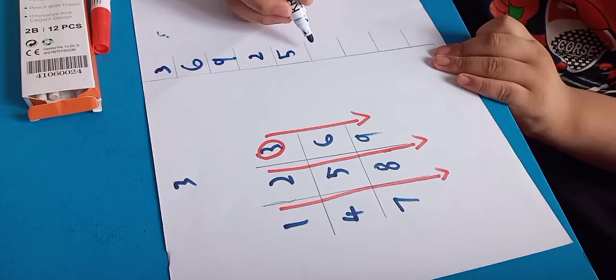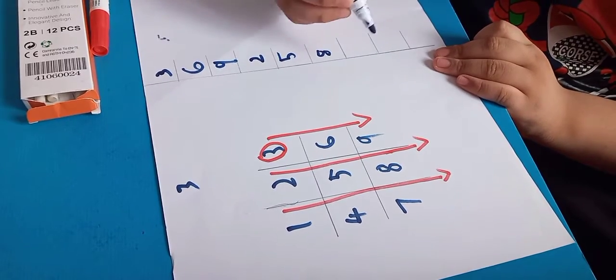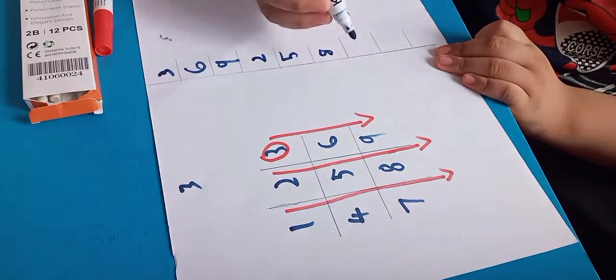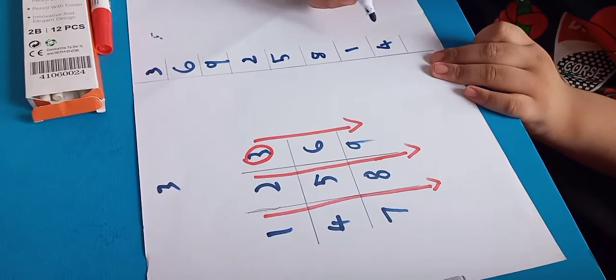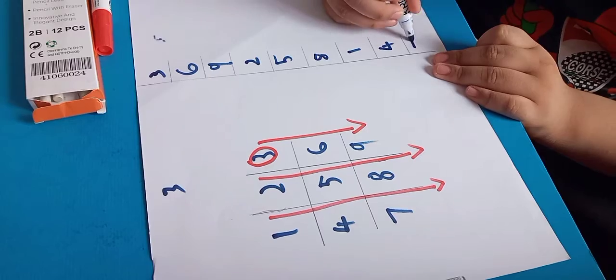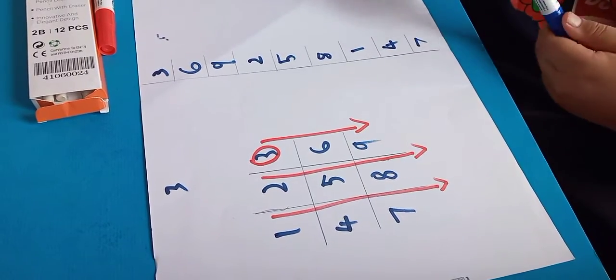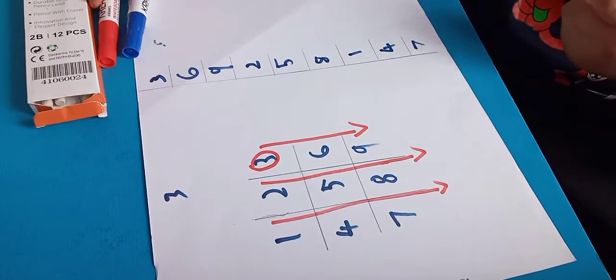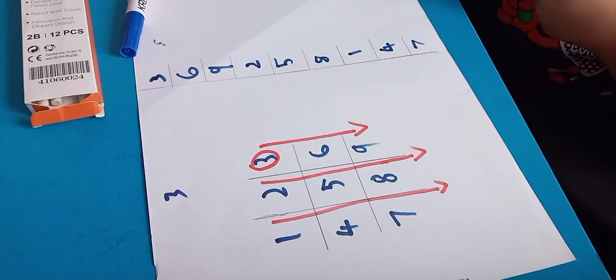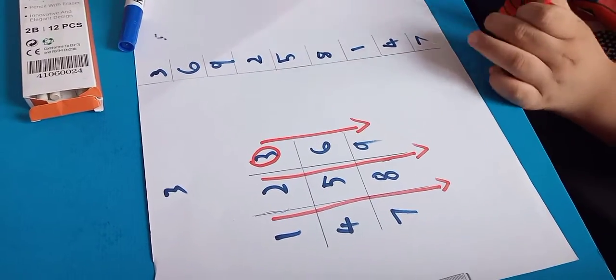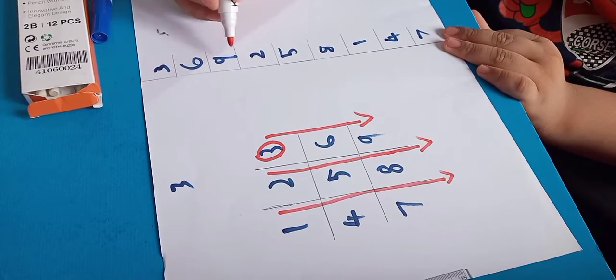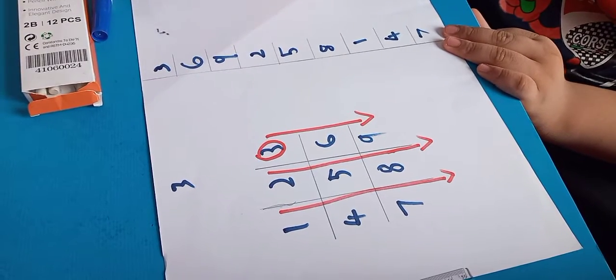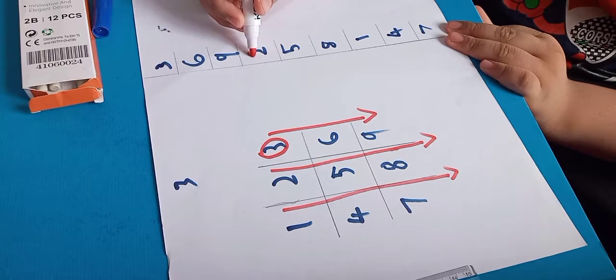Last arrow: 1, 4, and 7. Now we will circle the numbers that are less than 3. The numbers will be 2 and 1.